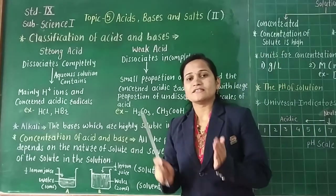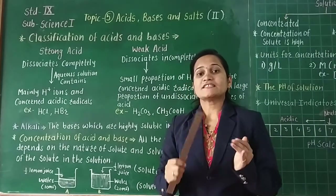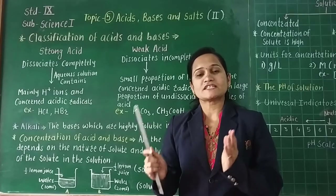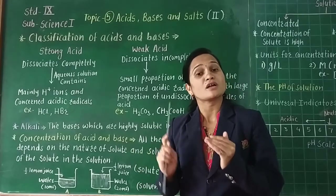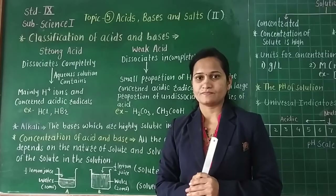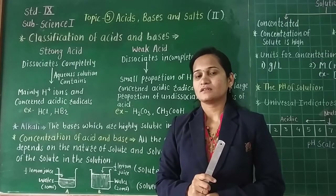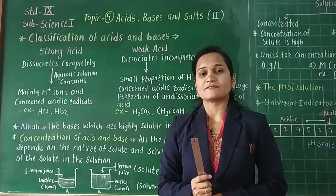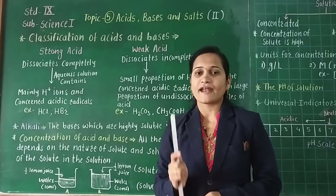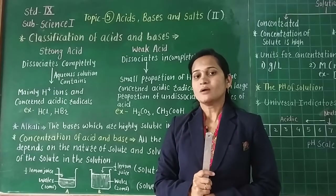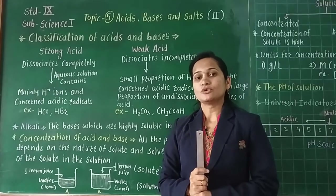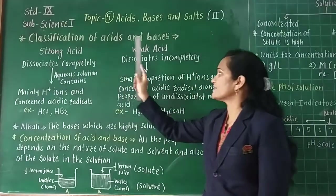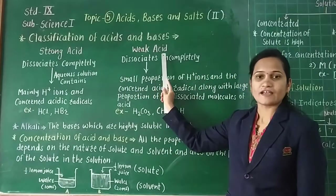This classification is given according to the dissociation of ionic compounds. According to that, acids and bases are classified into the strong and weak types. First, we will do the discussion about strong acid and weak acid.